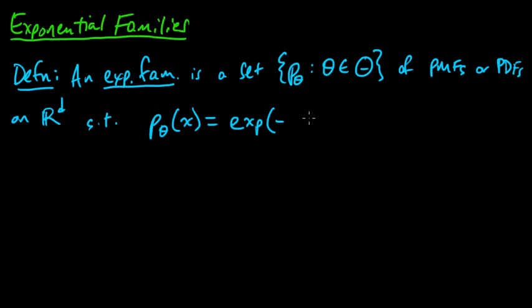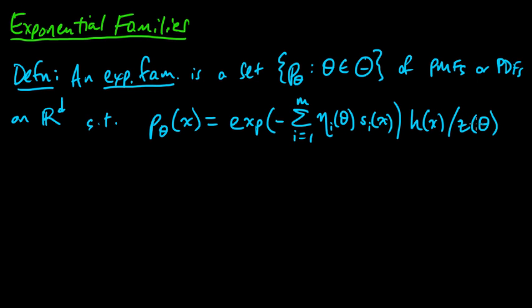So we have the exponential function, the same as e to the sum as i goes from 1 to M for some M, of η_i(θ) times s_i(x), times a function h(x), divided by z(θ).